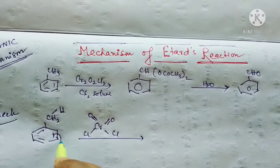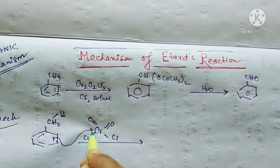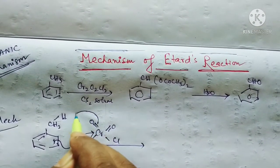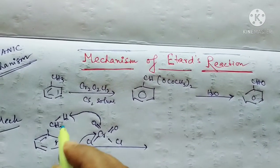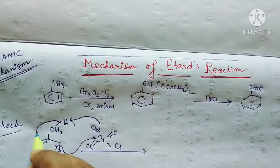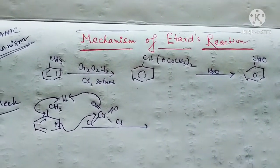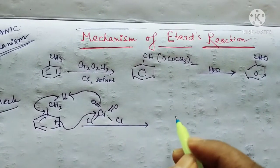This bond breaks to attack at this chromium position, and this double bond takes up this hydrogen, and here a double bond is created. You can see this double bond is created.